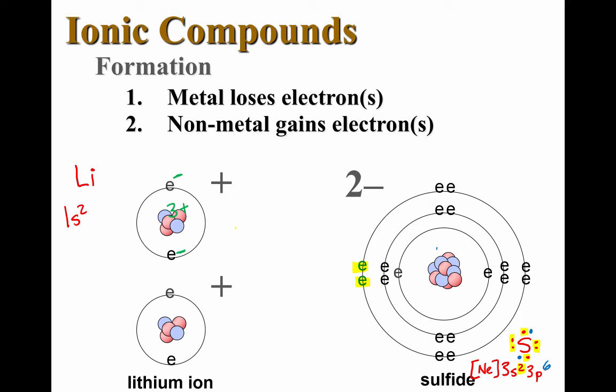I also want to point out to you something that happened in the name of these ions. Lithium's name didn't really change. We might now call it the lithium ion instead of a lithium atom. But it's still lithium. Sulfur however took on a new ending to its name. So sulfur becomes sulfide. If this were to happen to oxygen, oxygen would become oxide. Chlorine becomes chloride.